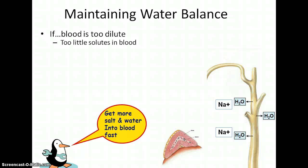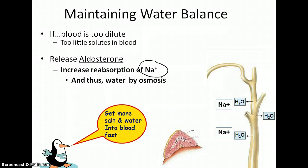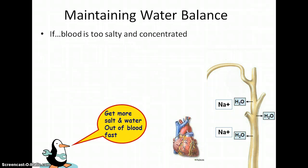On the other hand, if our blood is already too dilute and we need more solutes, the body does the opposite — it releases aldosterone. Aldosterone tells your nephrons to reabsorb sodium. Because of that, water will follow by osmosis, getting salt and a little bit of water back into the blood quickly, increasing both blood volume and osmolarity.